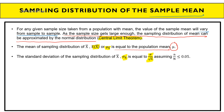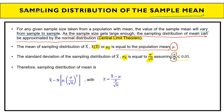This assumes that the sample size over population size is less than or equal to 0.05, where small n is the sample size and capital N is the population size. The sampling distribution of the mean is as follows: X̄ follows a normal distribution with mean equal to µ and variance equal to (σ / √n)². To transform from X̄ to Z, you use the standard Z-transform formula.